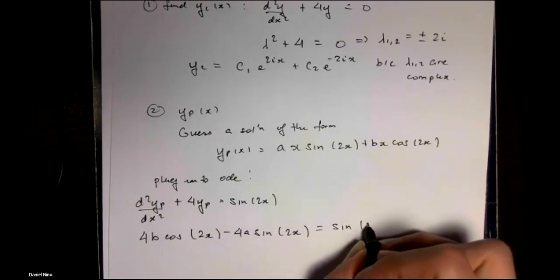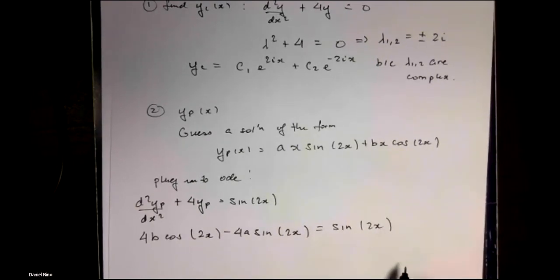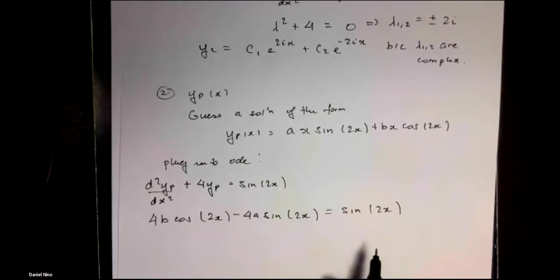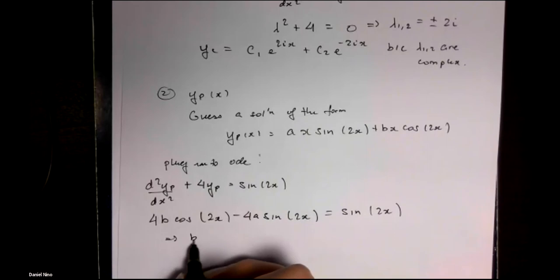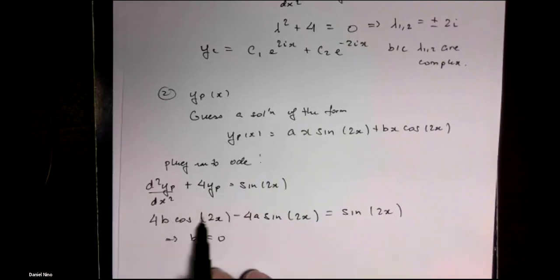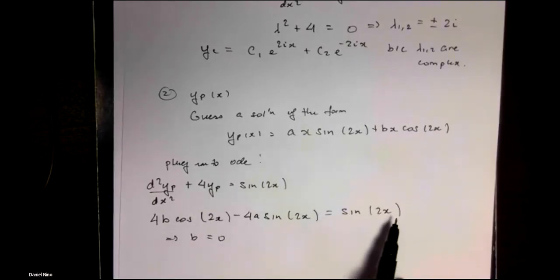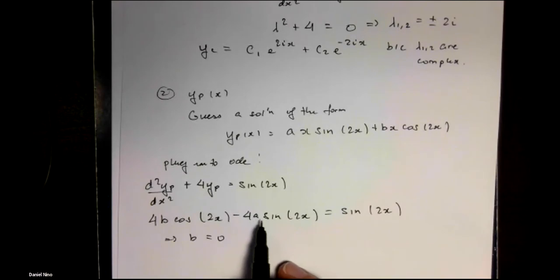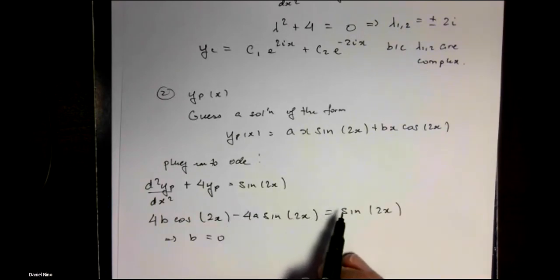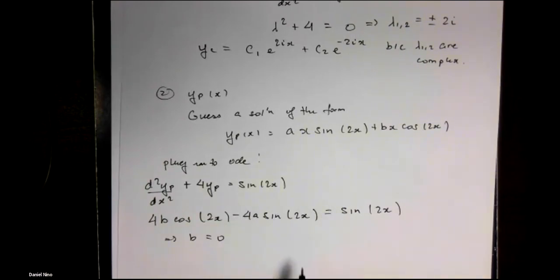This has to equal the right-hand side, which is sine 2x. For these two sides to match, you need b equal to 0 so that the cosine term goes away because there's no cosine term on this side, and you need a to be equal to minus a quarter because you want to be left with 1 multiplying the sine.